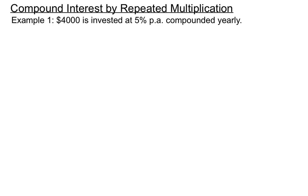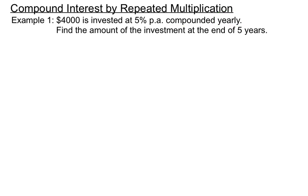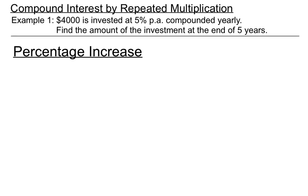We can figure out compound interest by repeated multiplication — this is the basic version, and there's a formula later. In this example, $4,000 is invested at 5% per annum, compounded yearly. In these questions we really have to look at the word after 'compounded', because that tells us the arrangement we make when calculating. Find the amount of the investment at the end of five years. This involves a percentage increase — each year the amount increases by 5%.